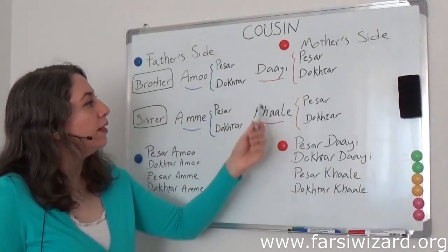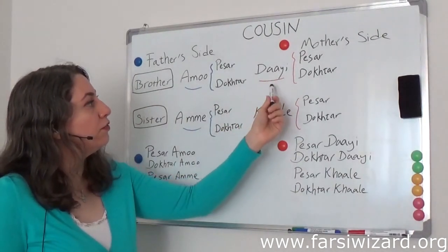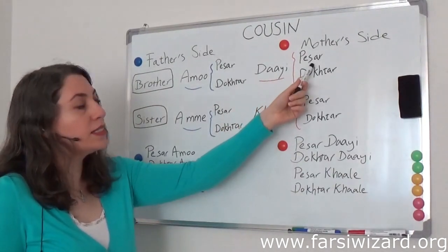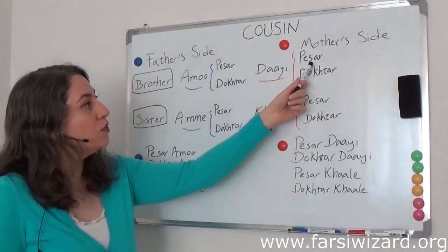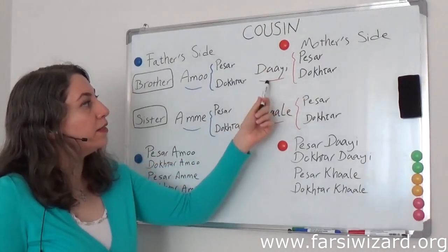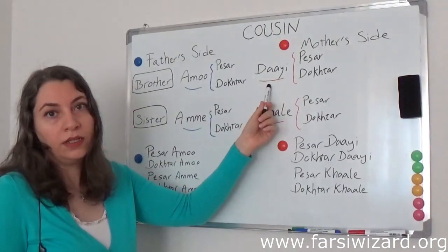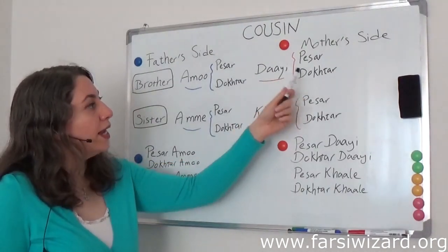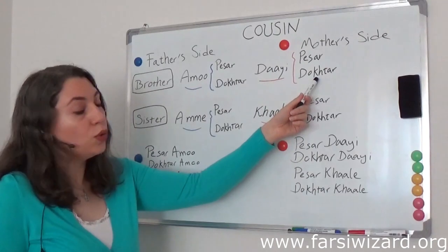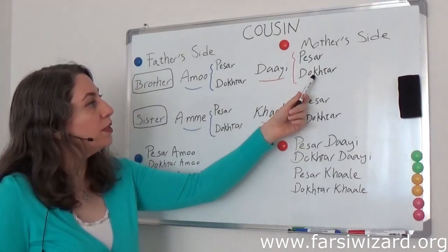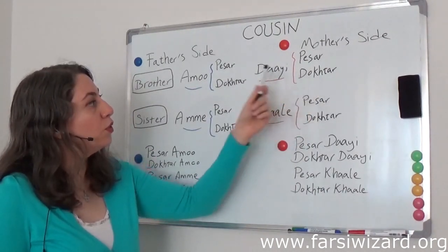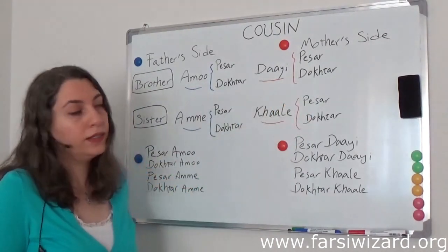Now, look at this. If your da'i has a son — 'pesar' — this cousin will be your 'pesar da'i.' If your da'i has a daughter — 'dokhtar' — this cousin will be your 'dokhtar da'i.'